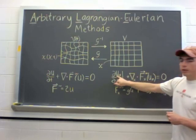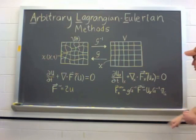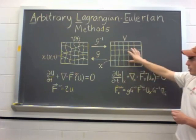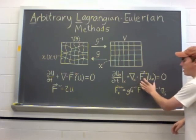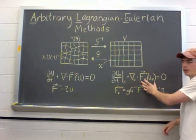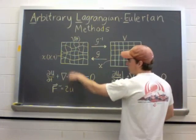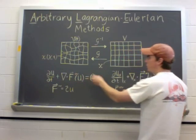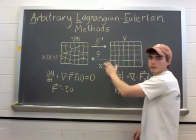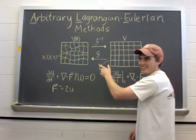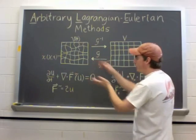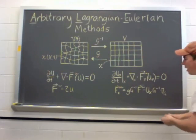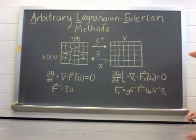So we introduce a new variable, u of X, which also depends on time and space, the reference space. And we have a new flux function. So instead of the original flux function, which is physics-based, we introduce the mapping to represent the moving geometry. And we achieve this flux function here.